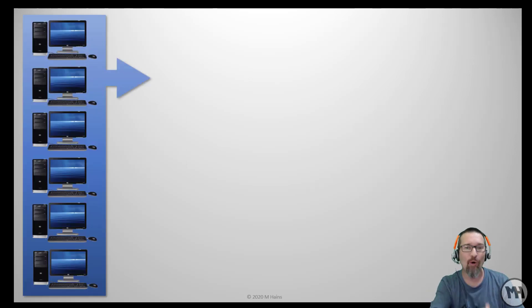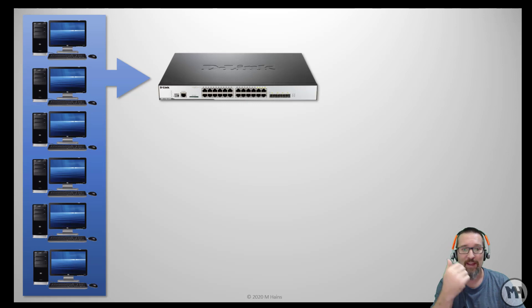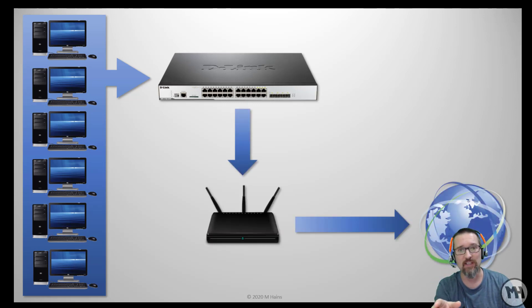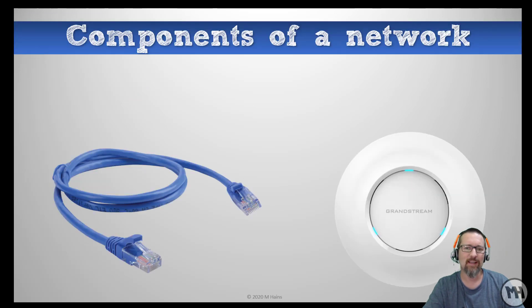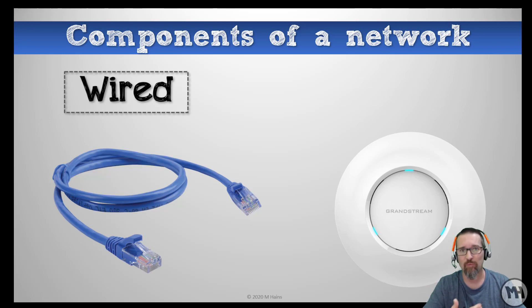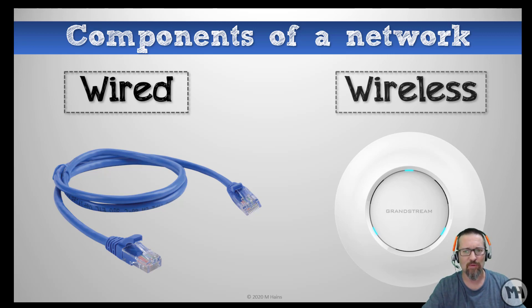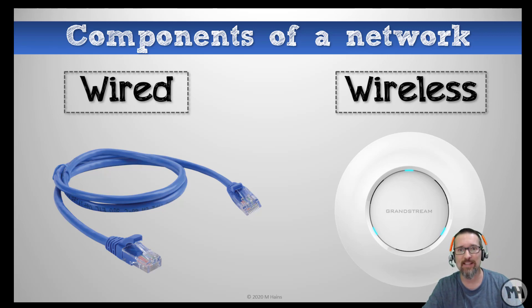Here visually are all the computers — there is your switch, going down to connect to the router, which then gives you your internet access. That's the basic path of a local area network. On the left hand side we have a wired network — an ethernet cable, RJ45 — and that connects you to the switch.